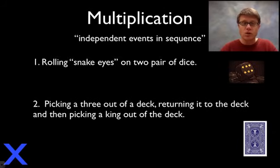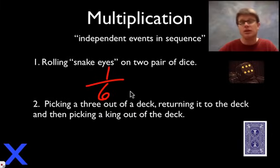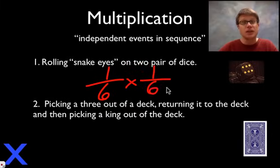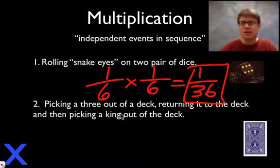Here's the first problem: rolling snake eyes on two dice. There are 6 sides to a die, and a 1 is going to occur on 1 out of every 6 sides, so it's a 1 in 6 probability of rolling a 1 on one die, times a 1 in 6 probability on the other die. The right answer is 1 in 36 — so it's going to be rare that you get snake eyes, roughly less than 3% of the time.